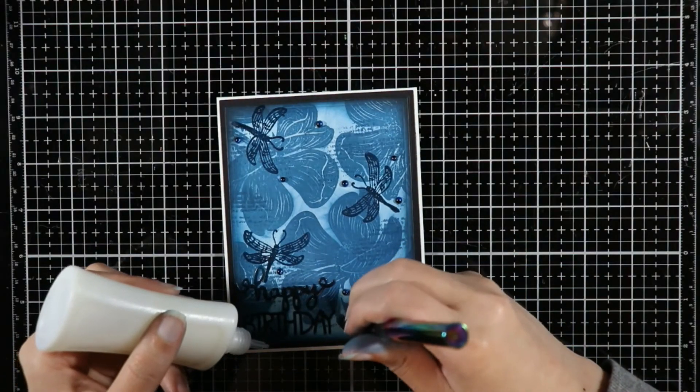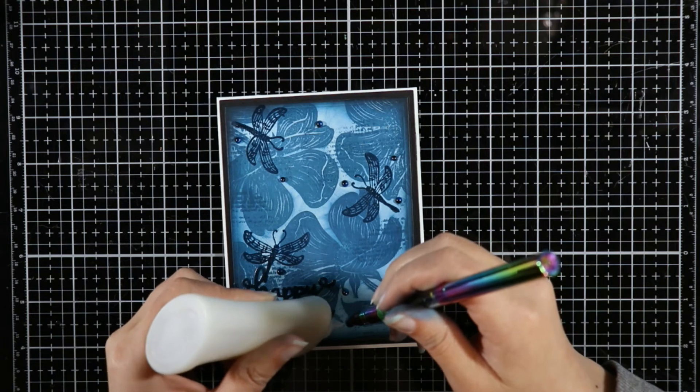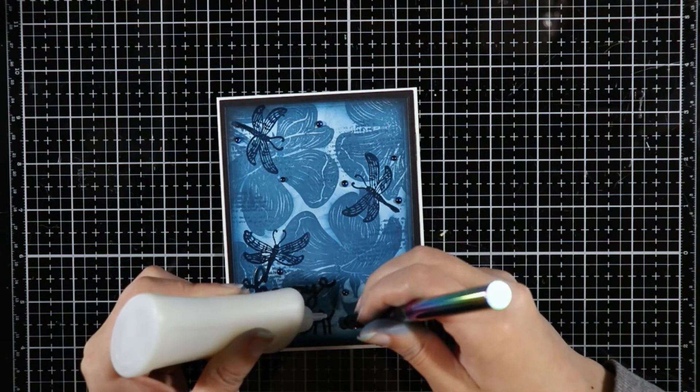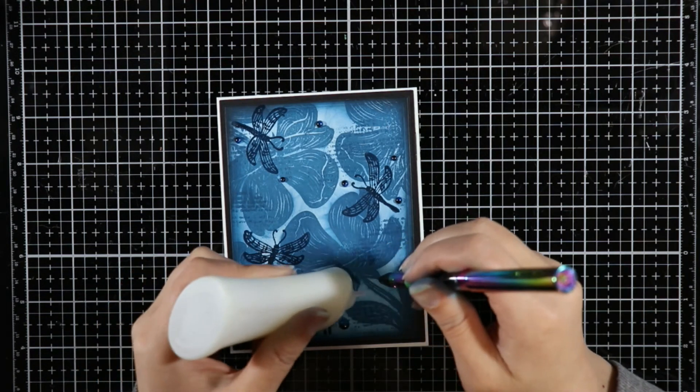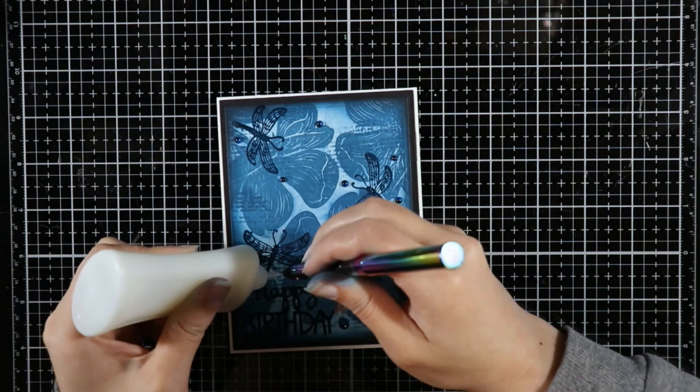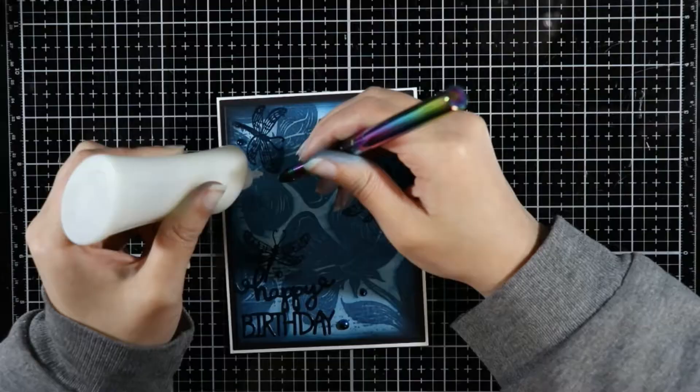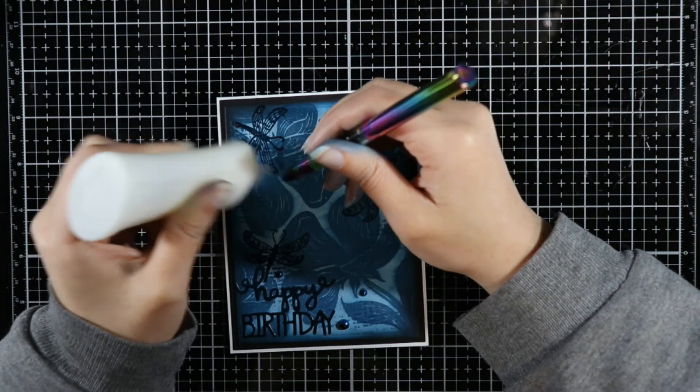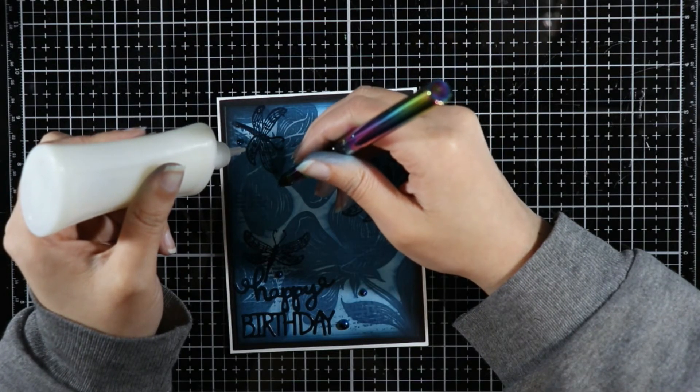Off screen I did mount that on a black mat and put it on a white card base. Now I'm just attaching some pearls from Cat Scrappiness. I can't remember the name of them, but I will have them listed in my supply list.